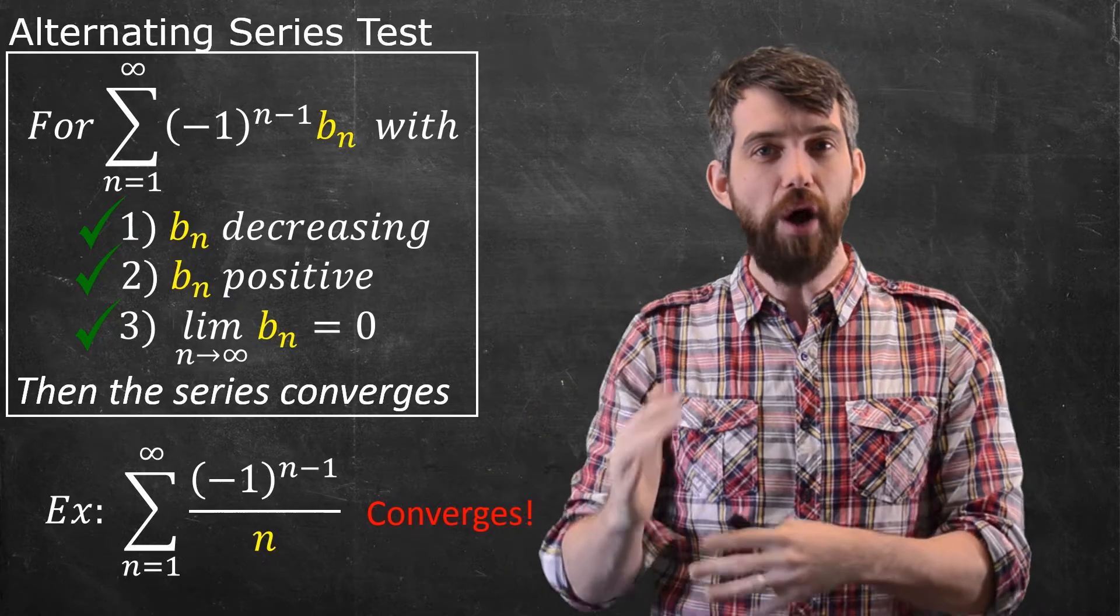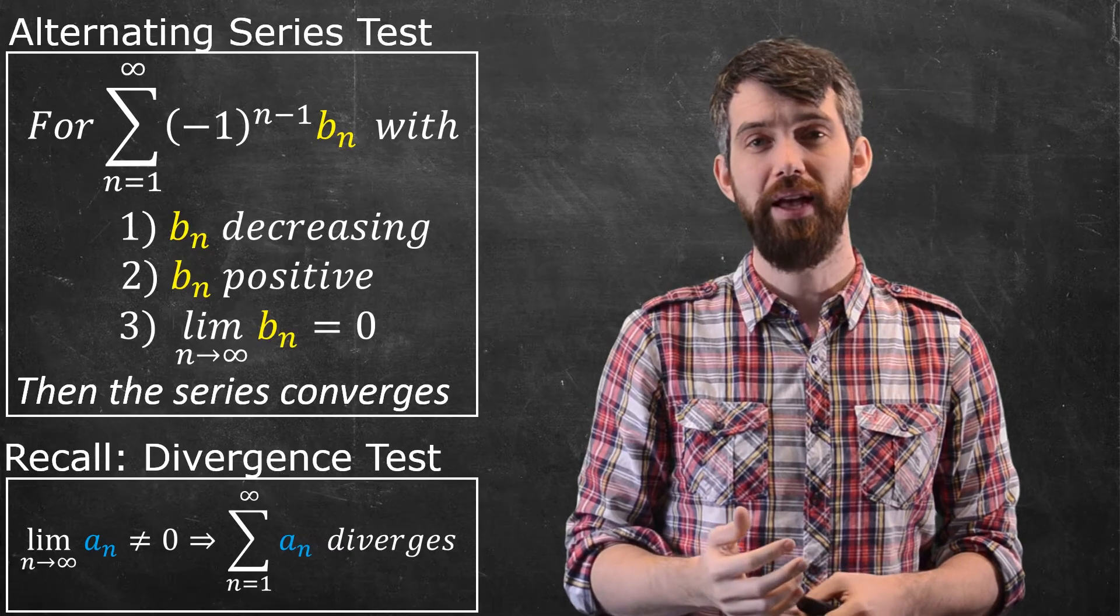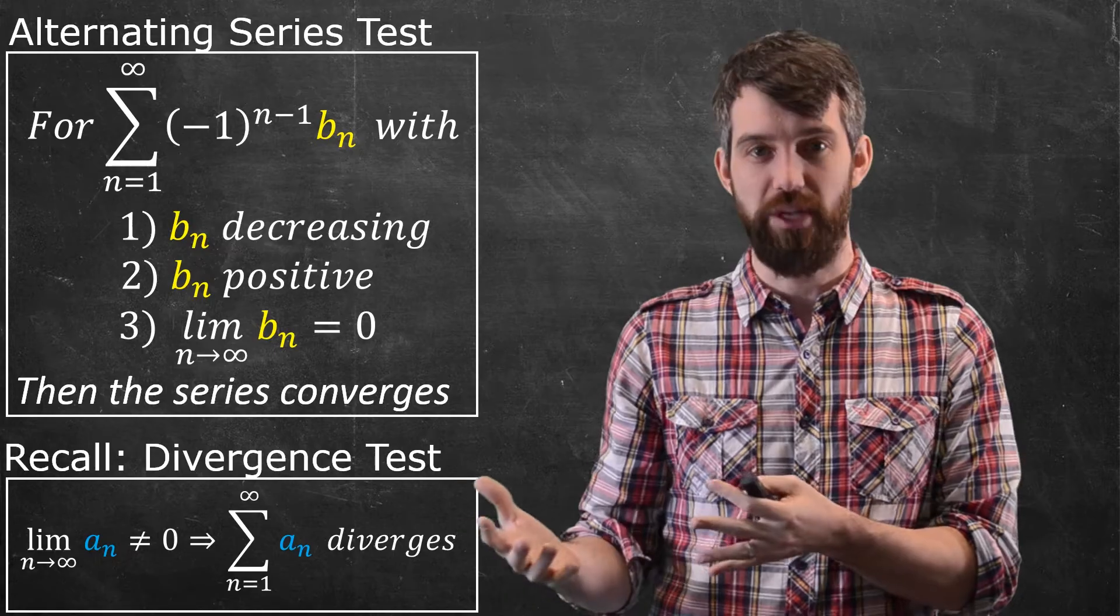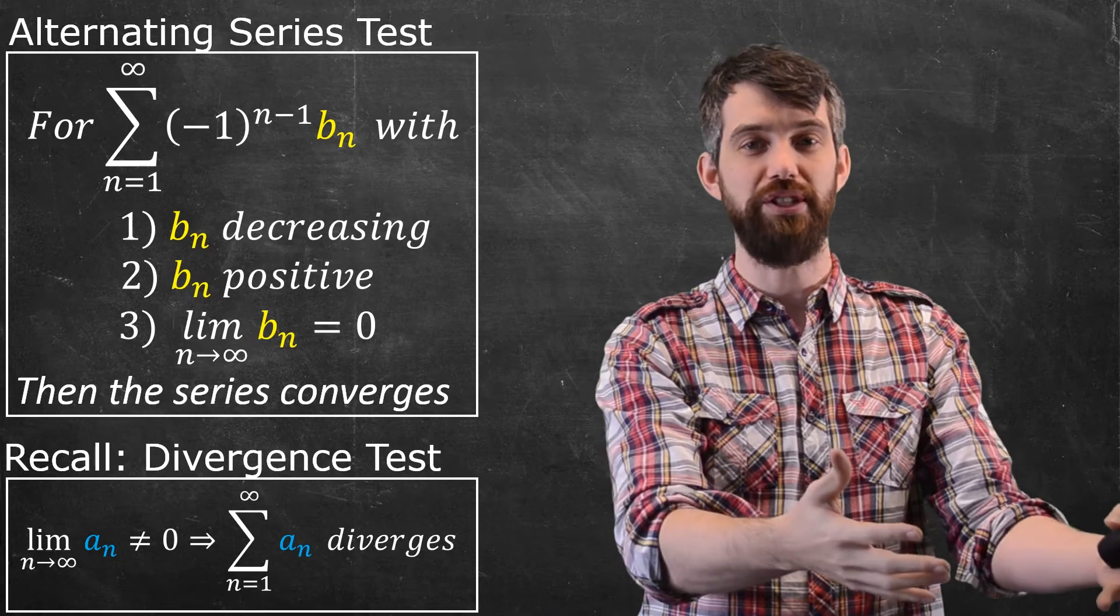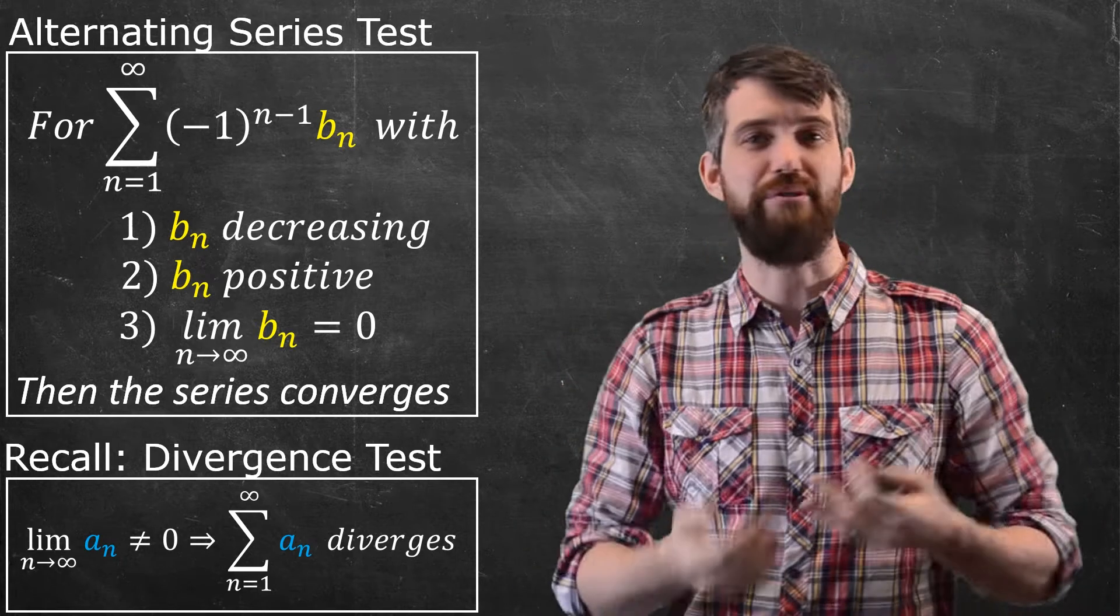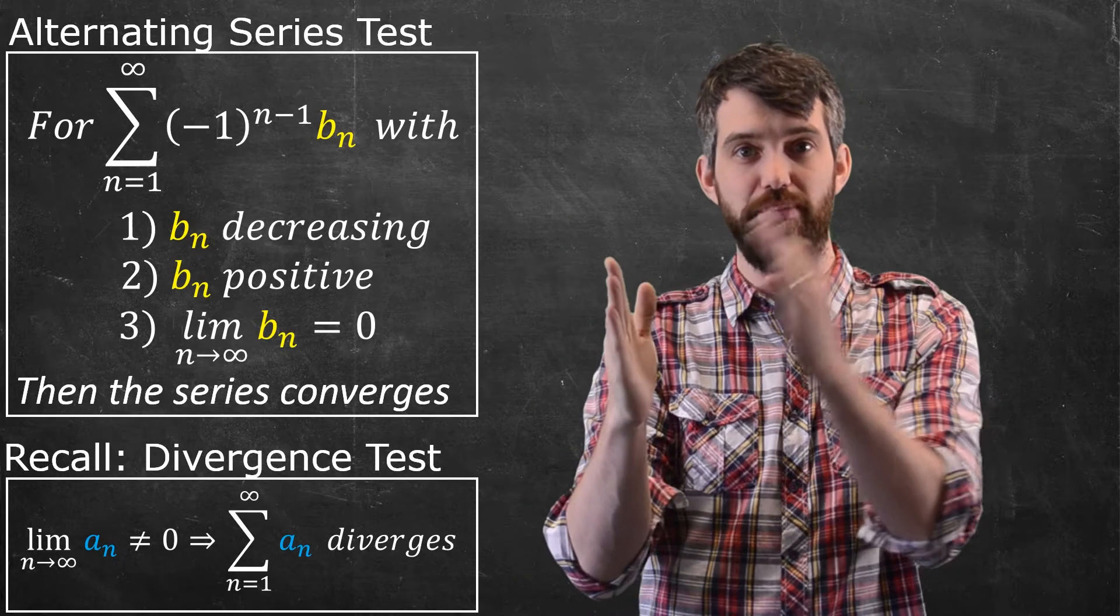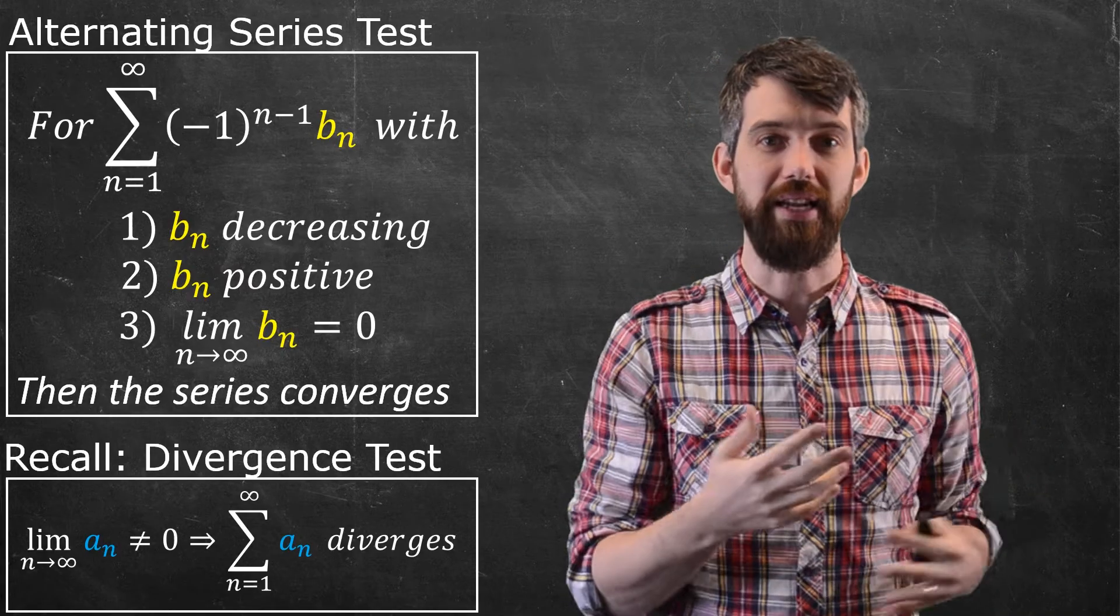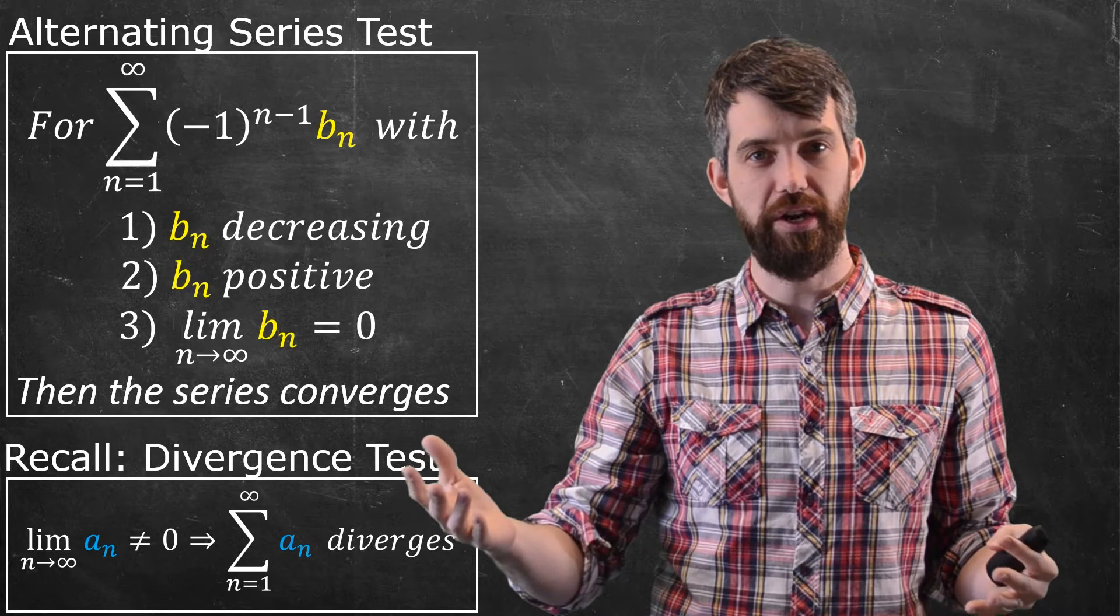I want to contrast this with the divergence test. The divergence test says if the limit of the sequence is non-zero, then the series diverges. This makes sense: suppose lim a_n = 7. Then the series approaches 7 + 7 + 7 + 7, which diverges. So you need lim a_n = 0 for convergence.